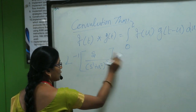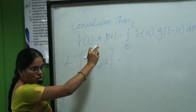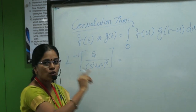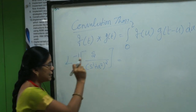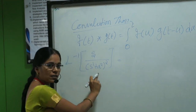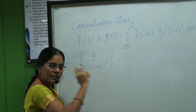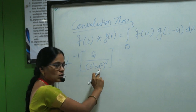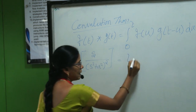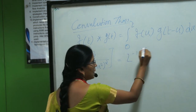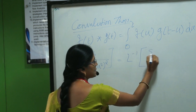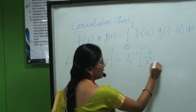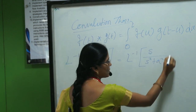First, you have to split this function. The numerator s you split as s into 1. The denominator (s² + a²)² you split into two factors: (s² + a²) times (s² + a²). So we write: L inverse of s divided by (s² + a²).